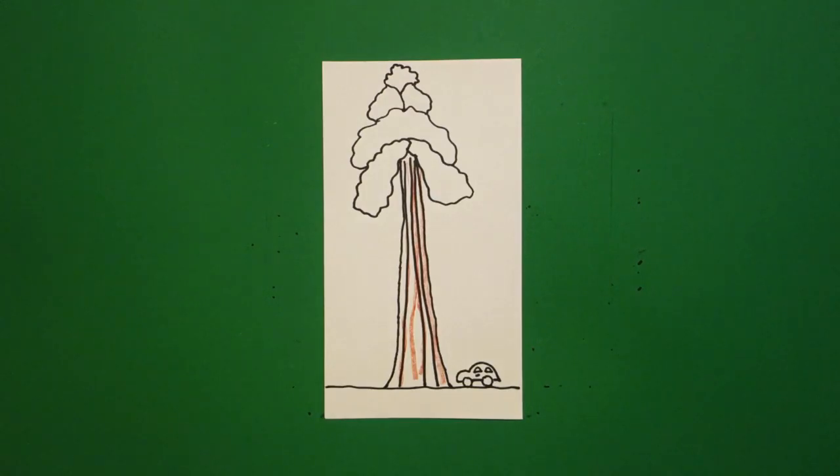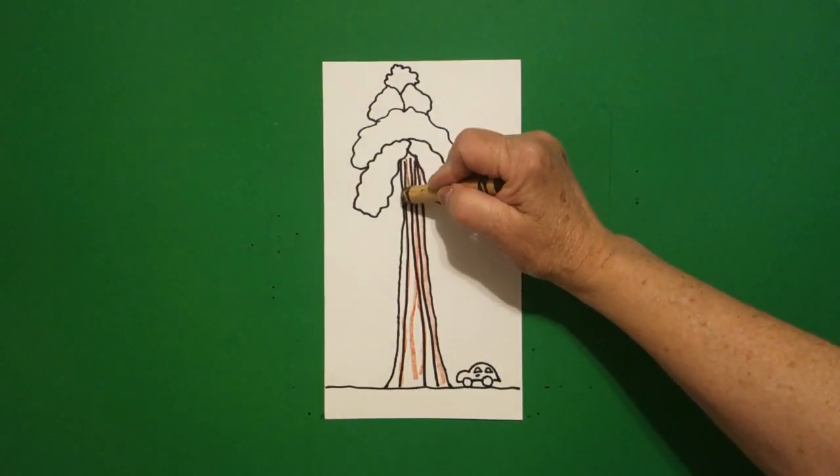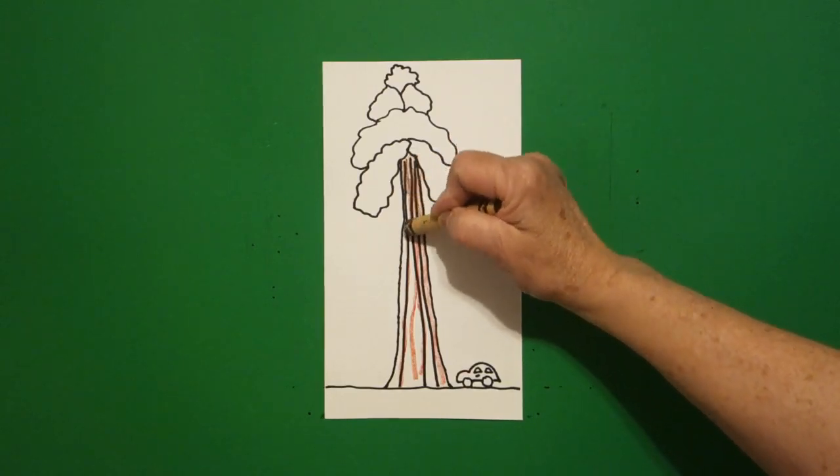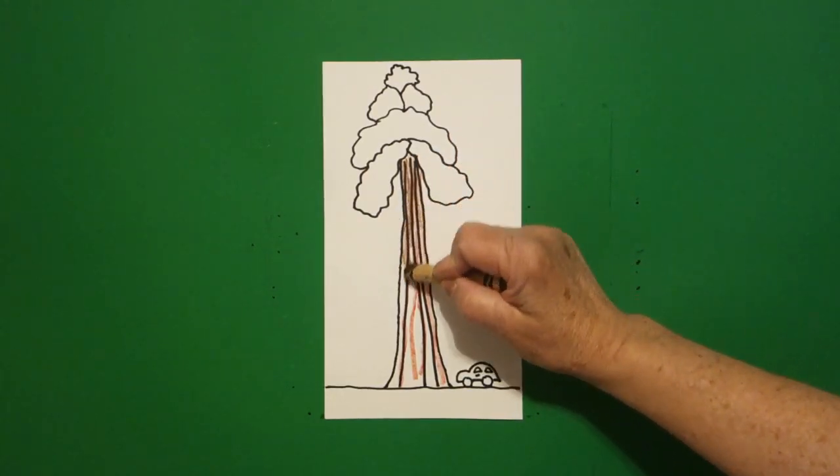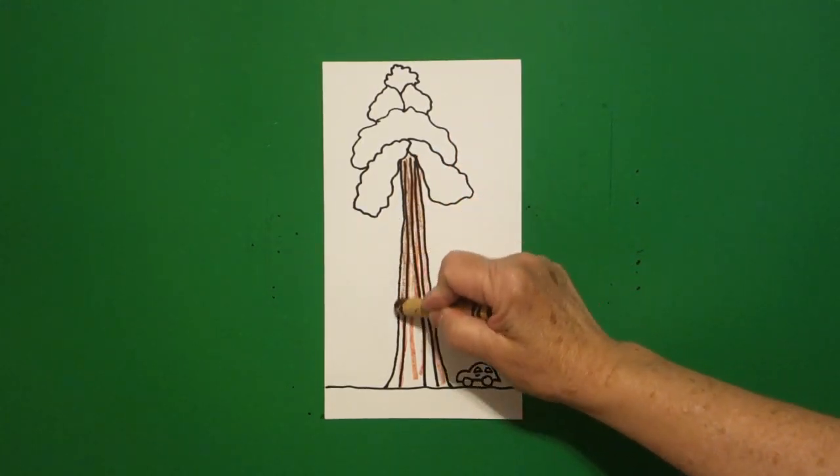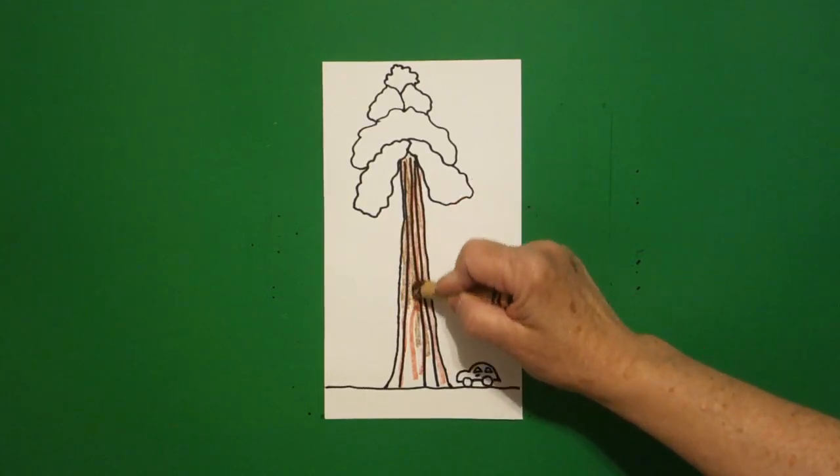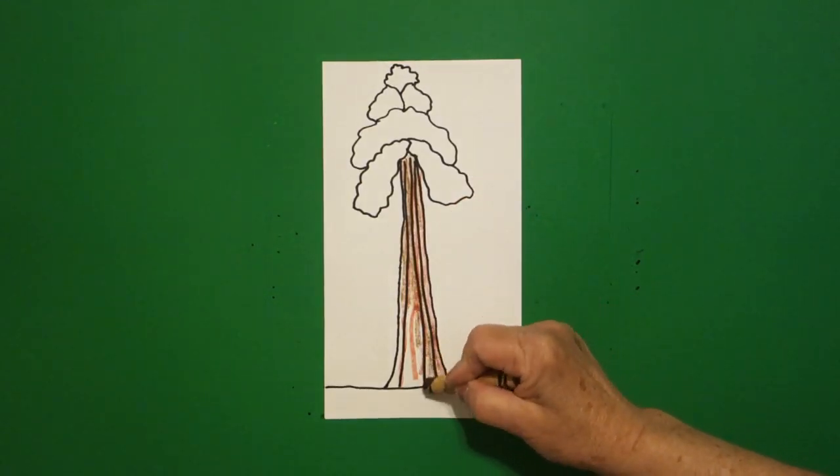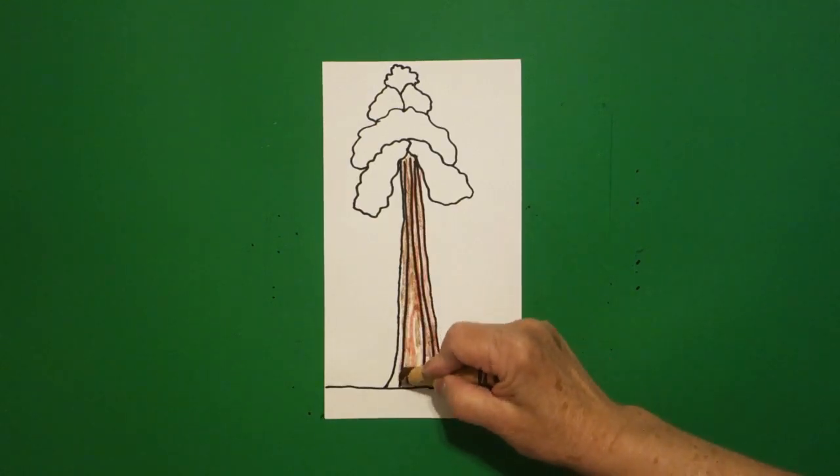Then I take my brown and I just add over it, double color, brown all the way down over your red so you can see it still a little bit and blend it in towards the bottom.